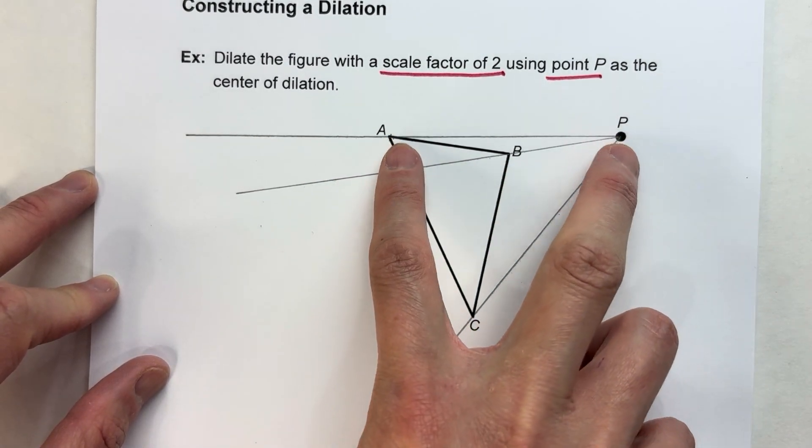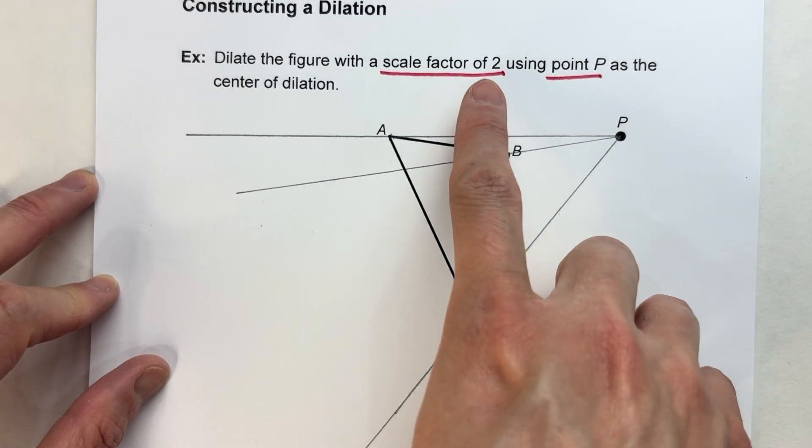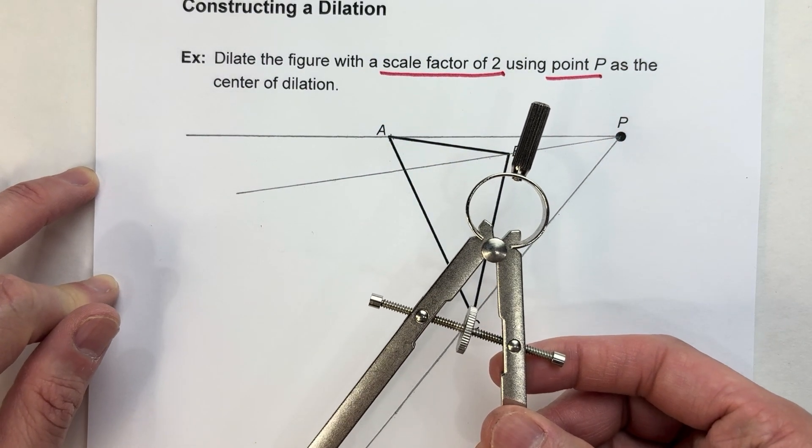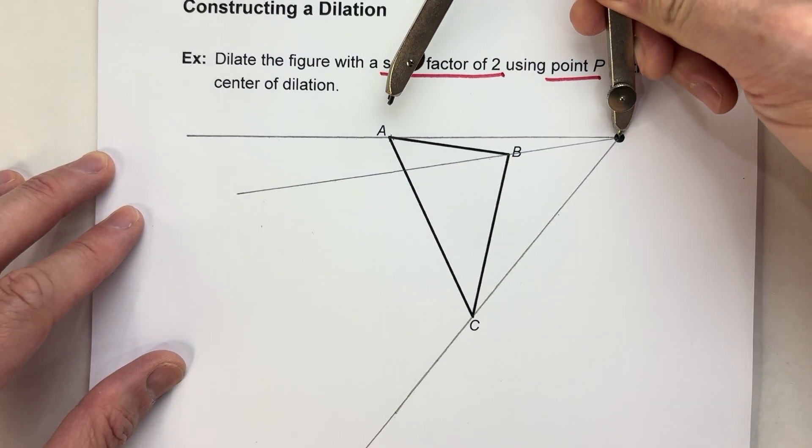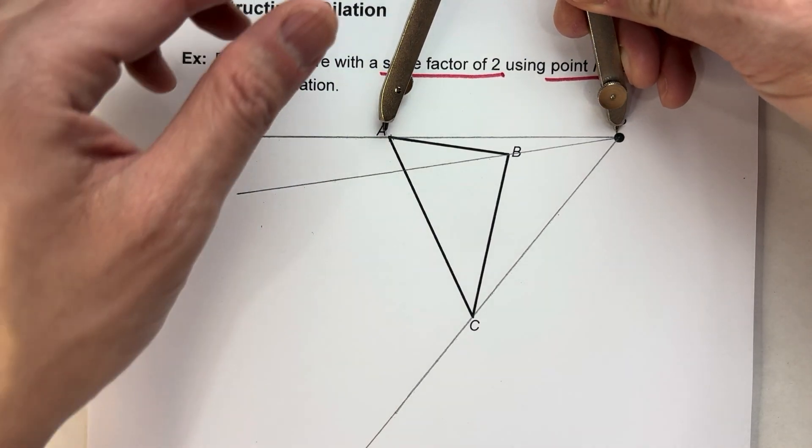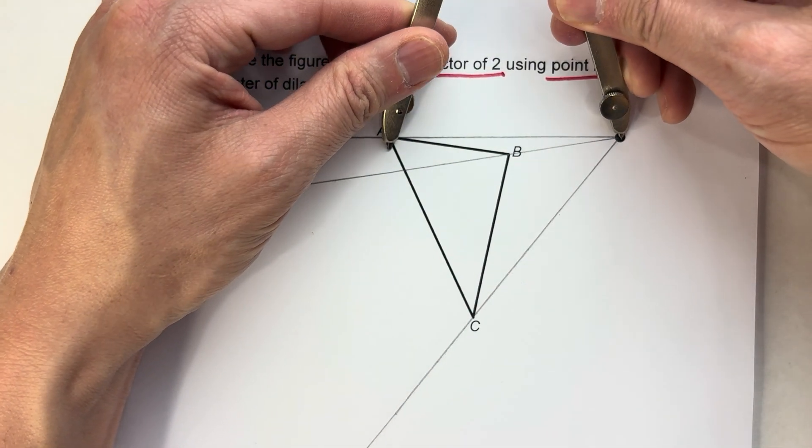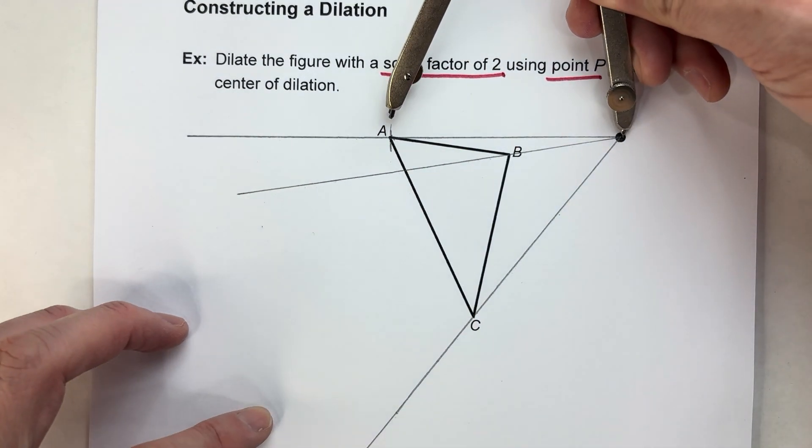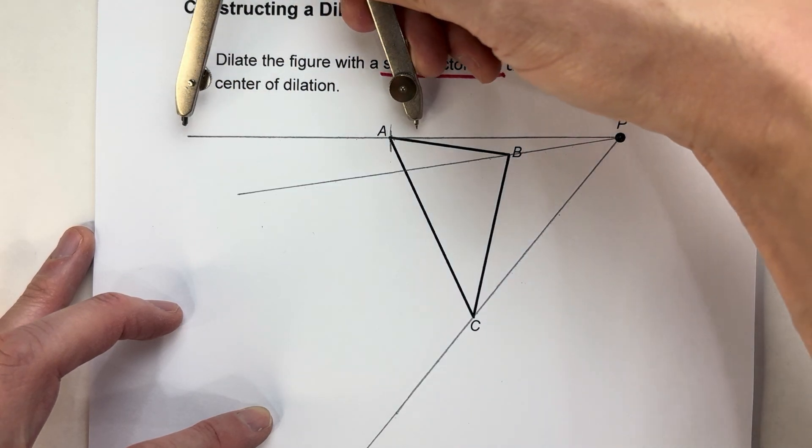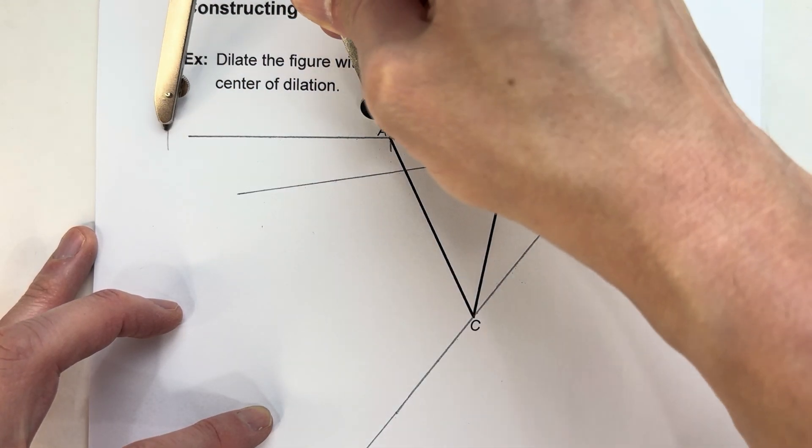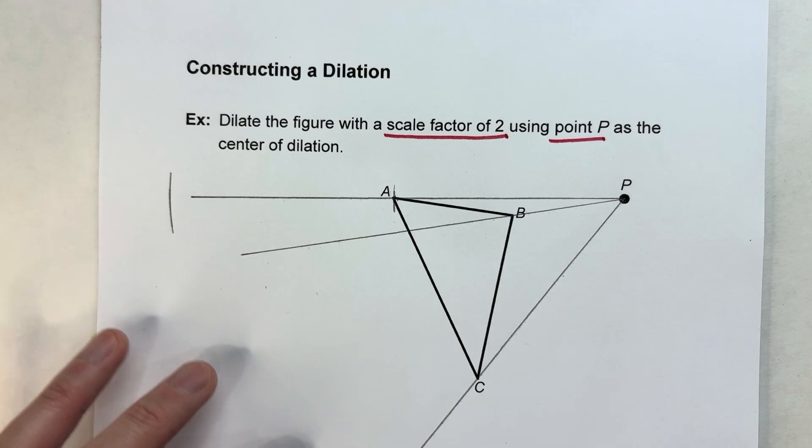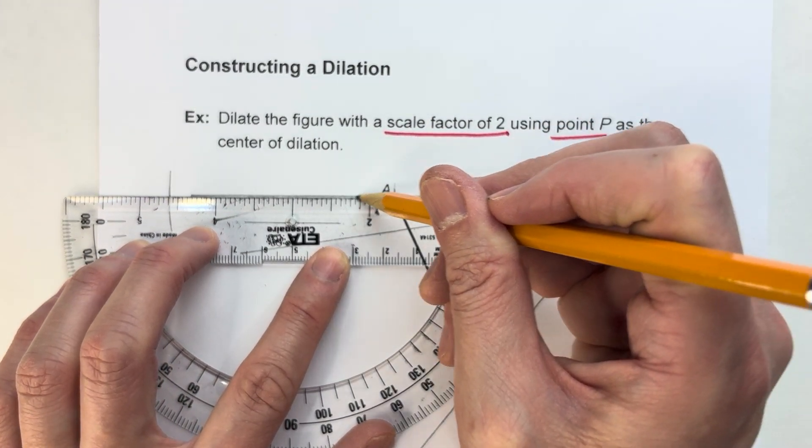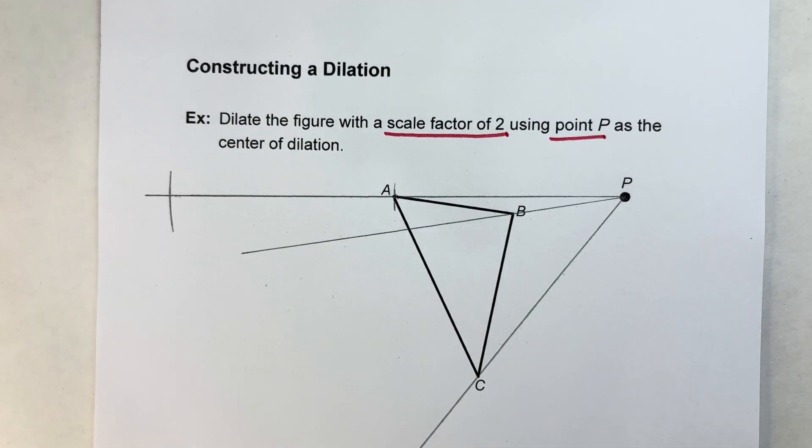Now we know the distance from P to A is this far. Our scale factor is two, that means we're going to double this length, and that's where we need our compass. So I've set my compass for the distance between P and A. There it is. That's the current distance. The scale factor is two, so we're going to double this. I'm going to take this and repeat it over here. I didn't make the line long enough, so let me make that line a little bit longer.